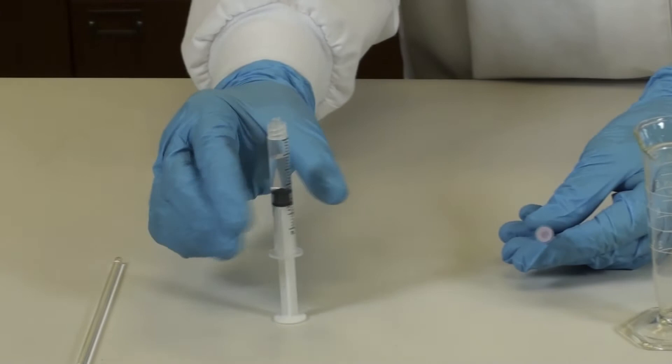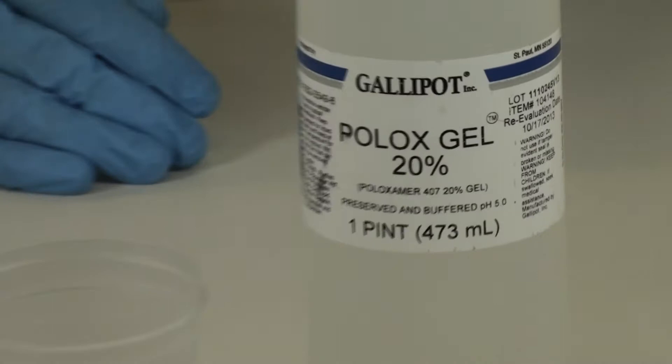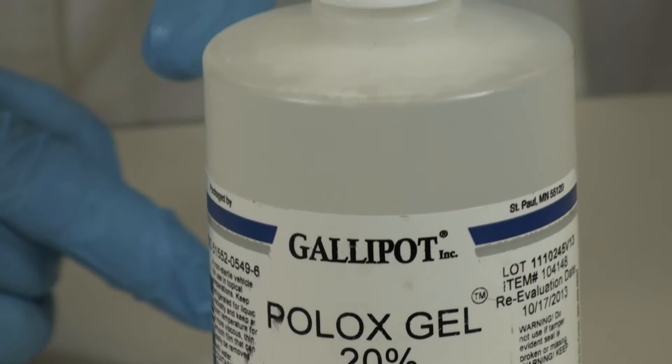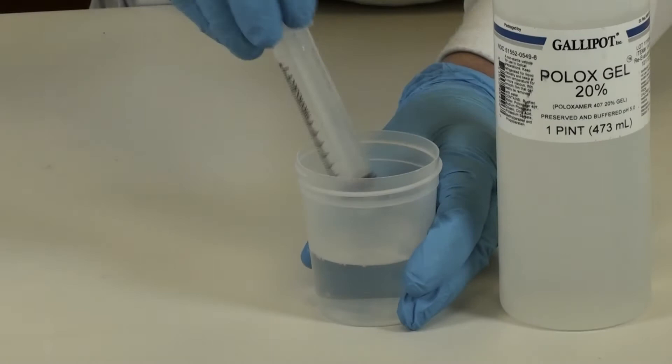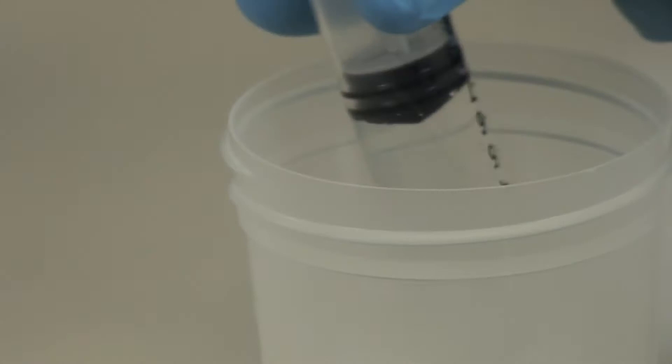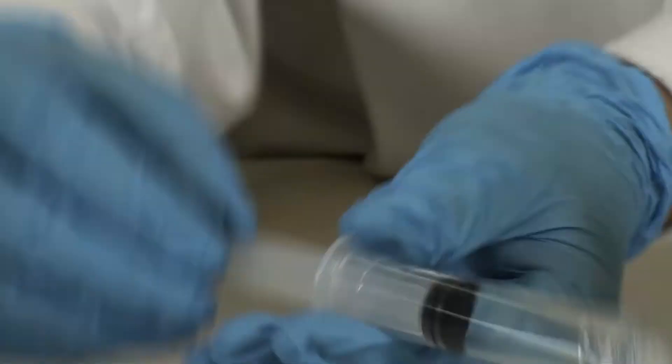In this step, we're going to measure the required amount of poloxamer 20% solution. It is stored in the refrigerator. At this temperature, it is in solution form. As it warms to room temperature, it will turn into a gel. You want to be sure you don't have air bubbles in your syringe, so tap any air out of the syringe and expel it and then adjust to a final volume.